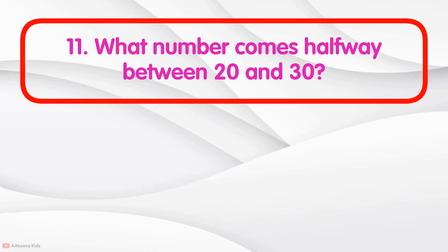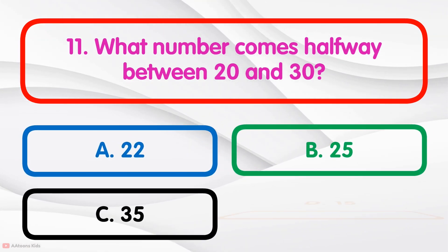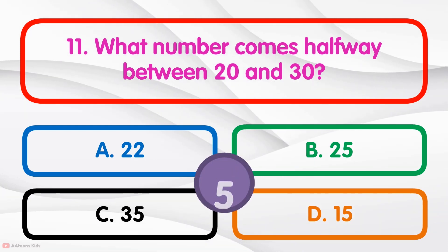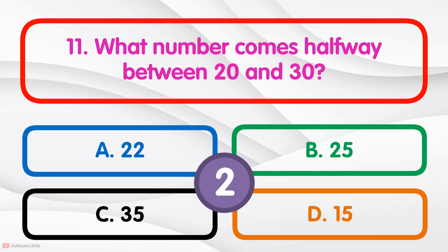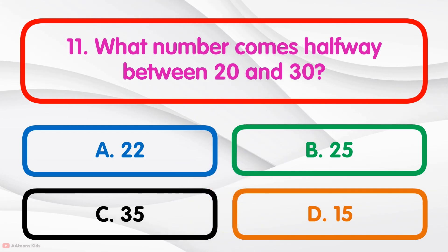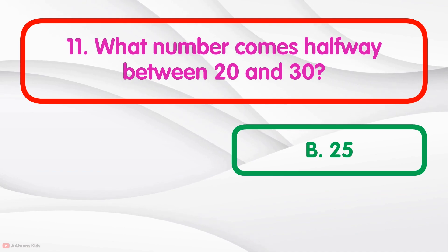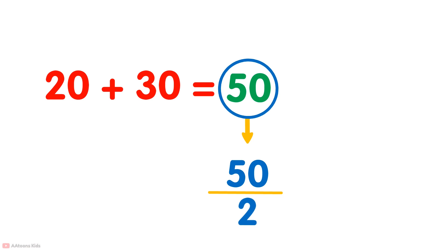What number comes halfway between 20 and 30? Option B: 25. To find the halfway between two numbers, simply add both numbers. Adding 20 plus 30 is 50. Now divide 50 by 2. You will get your answer: 50 divided by 2 is 25.